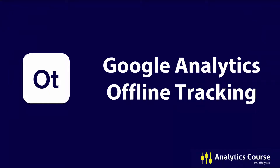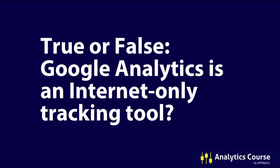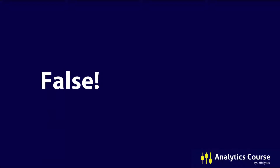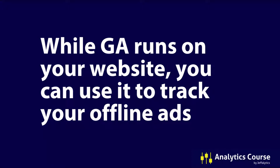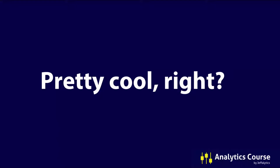Let's talk about Google Analytics offline tracking. I'm going to start with a question: true or false, Google Analytics is an internet-only tracking tool, meaning it can only track activity that happens on the internet and can't track anything offline? I would say the answer is false, because you can track things not connected to a computer as long as they trigger somebody to use a computer or mobile device to visit a website.